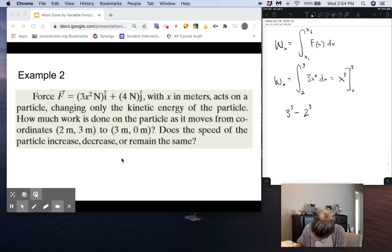So we get 3 cubed minus initial 2 cubed. That is just 3 times 3 times 3, which is 27, minus 2 times 2 times 2, which is 8. 27 minus 8 is 19 joules of work done in the x direction.